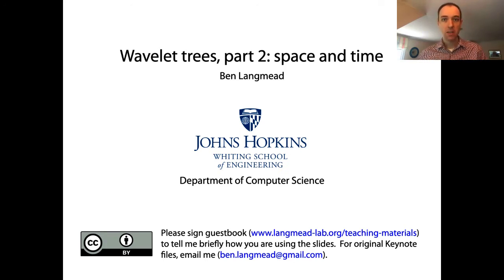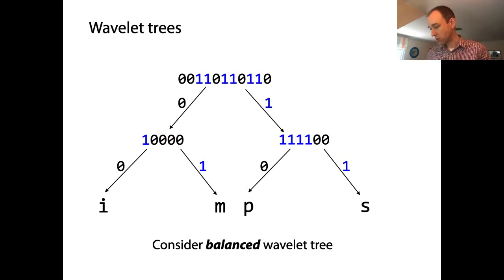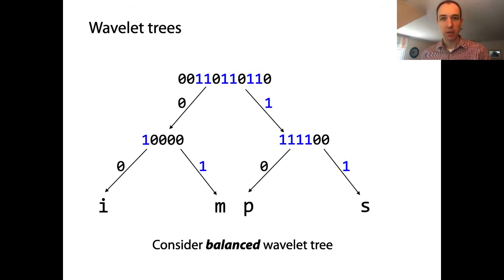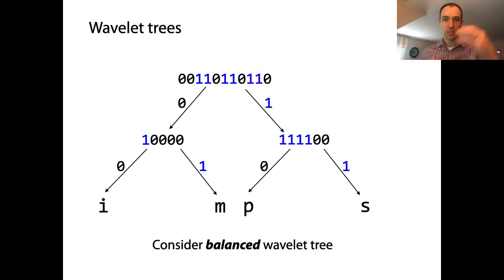Let's start by thinking about time, and to think about time let's think of the shape of the wavelet tree. Here's one of the wavelet trees that we drew in the previous lecture representing the string Mississippi, and this one's balanced — all the leaves are at the same level of the tree. Let's consider a balanced wavelet tree and think about what the queries are doing.